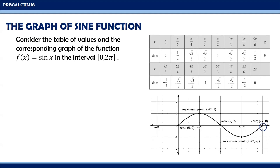Meaning, beyond this point, the graph will repeat the same pattern. One cycle of the graph of the sine function in 0 to 2π has its maximum point at (π/2, 1) and minimum point at (3π/2, -1), while its zeros are at x = 0, π, and 2π.